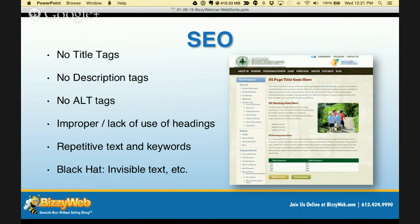Every image on your website should also have an alt tag. When you hover your mouse over an image, it should describe what that image is — ideally referencing the topic of that page so Google can understand it and rank you better. If you use headings incorrectly, or don't have H1, H2, H3 tags, or if you have invisible text — like white text on a white background — or repetitive text in the footer of every single page, that will get you downgraded or even banned by Google.